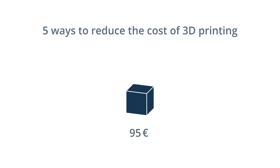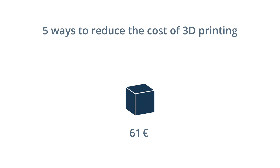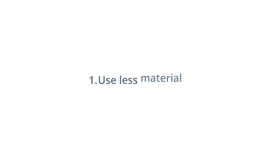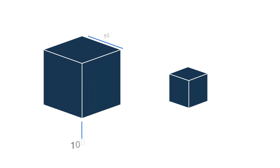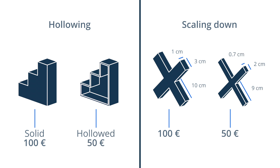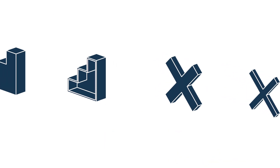There are a few tricks related to designing, manufacturing and post-processing parts that can help you reduce the cost of 3D printing. 1. Use less material. 3D printing project costs mostly depend on the amount of material used to print the part. That's why hollowing, scaling down your model and eliminating any unnecessary features can significantly reduce production costs.